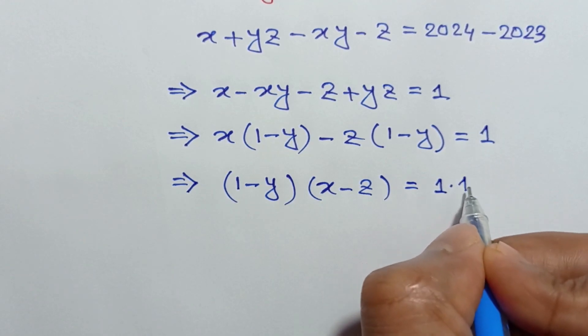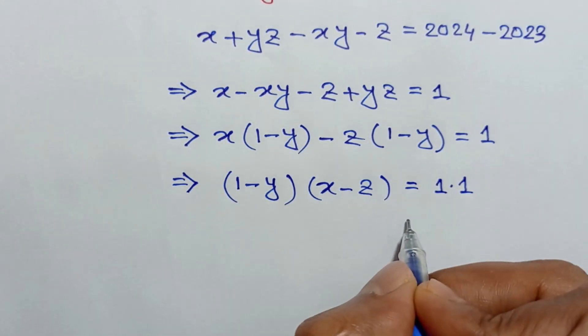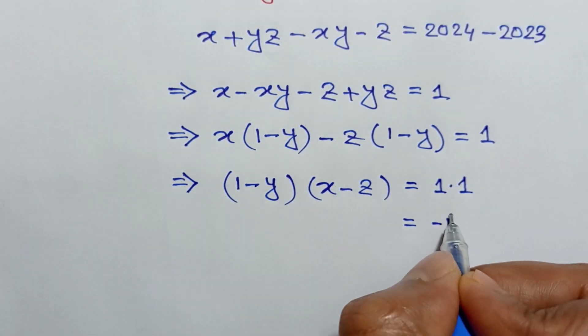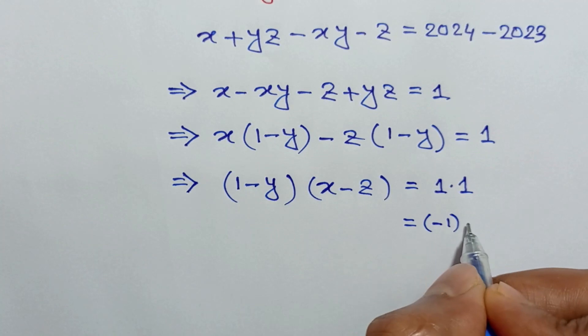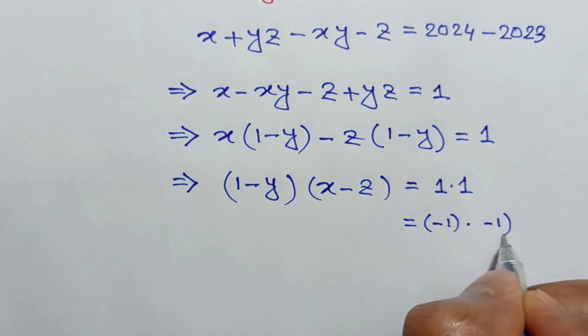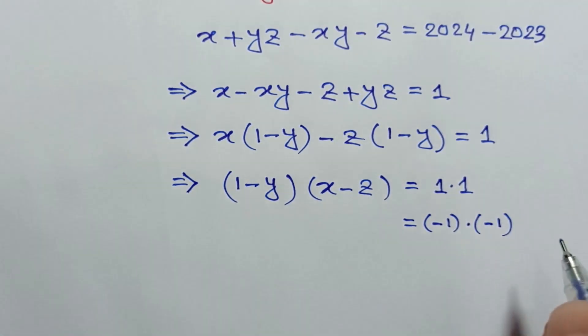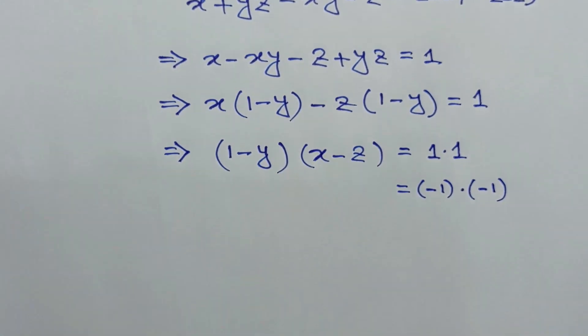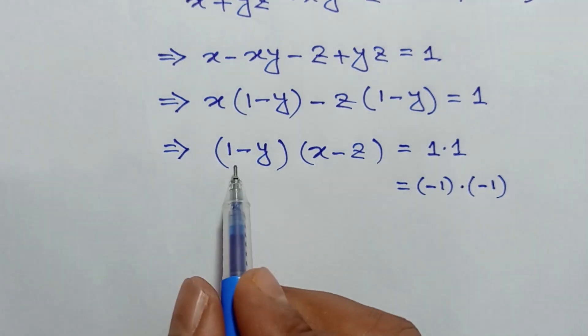This can be written as 1 times 1 equals 1, or negative 1 times negative 1 equals 1. So for integer solutions we have two cases.